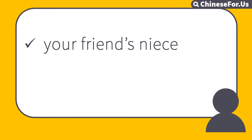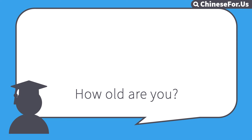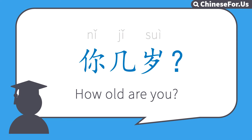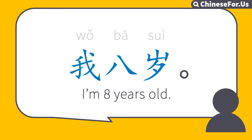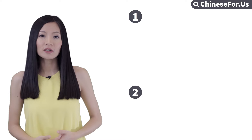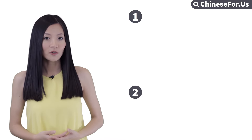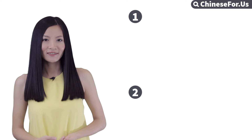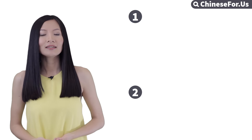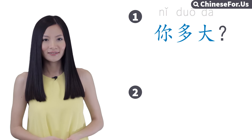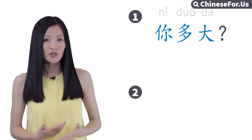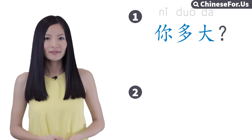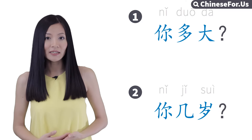So suppose this is your friend's little niece. She's 8 years old. How do you ask her age? 你几岁? 我八岁. Very good. So can you recall the two ways of asking people's age? The first one, not used for children: 你多大? And the second one for children: 你几岁?